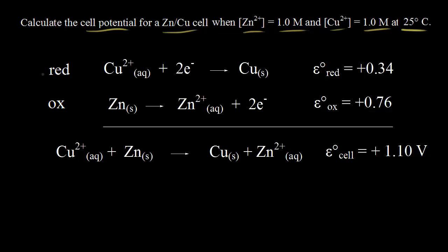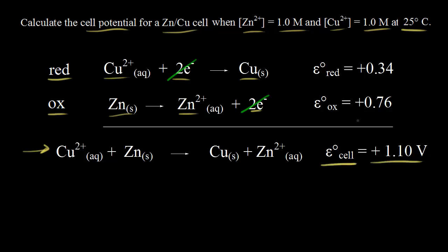Just to remind you of the reduction half-reaction and the oxidation half-reaction: copper two-plus ions are reduced — they gain electrons to form solid copper — and solid zinc is oxidized, so zinc loses two electrons to form zinc two-plus ions. Those two electrons lost by zinc are the same electrons gained by copper two-plus, so they cancel out when you write your overall reaction. Down here we have our overall redox reaction, and the standard cell potential is equal to positive 1.10 volts.